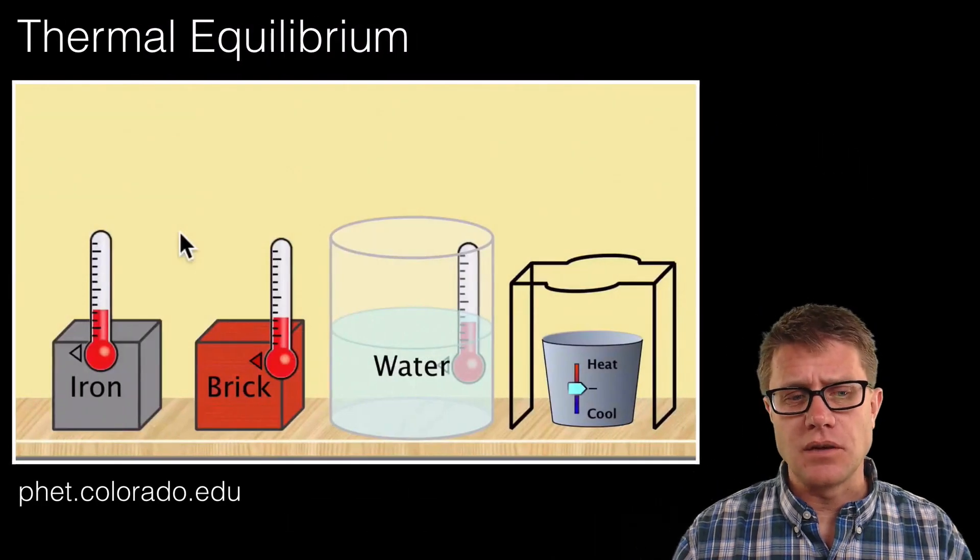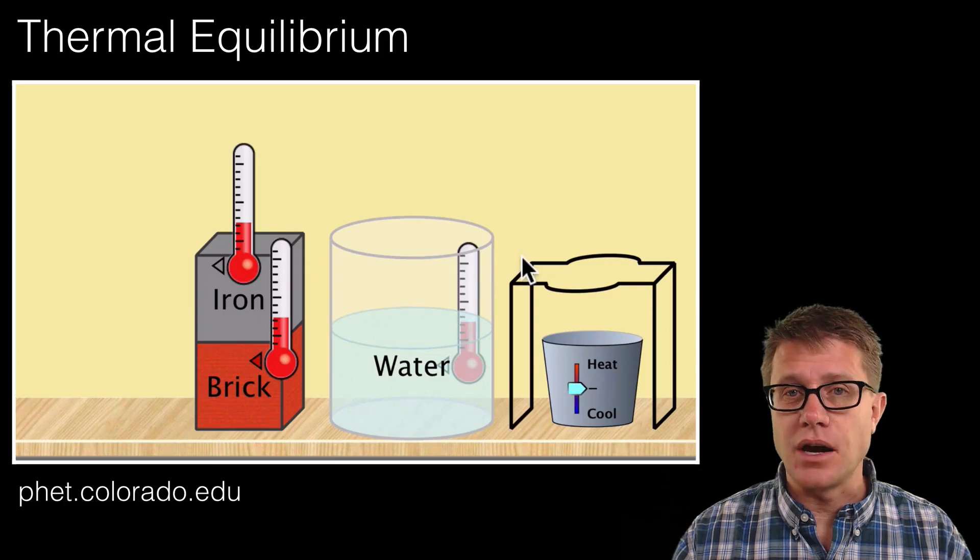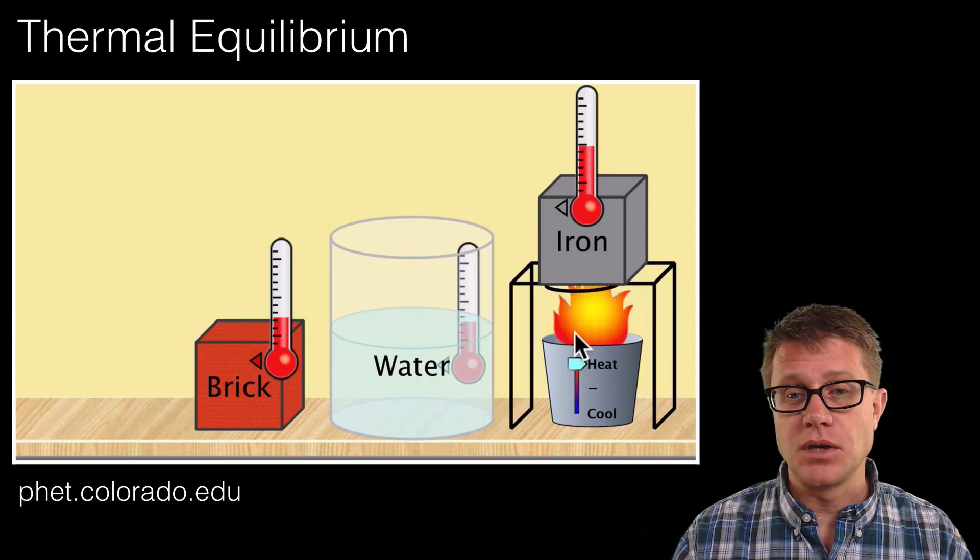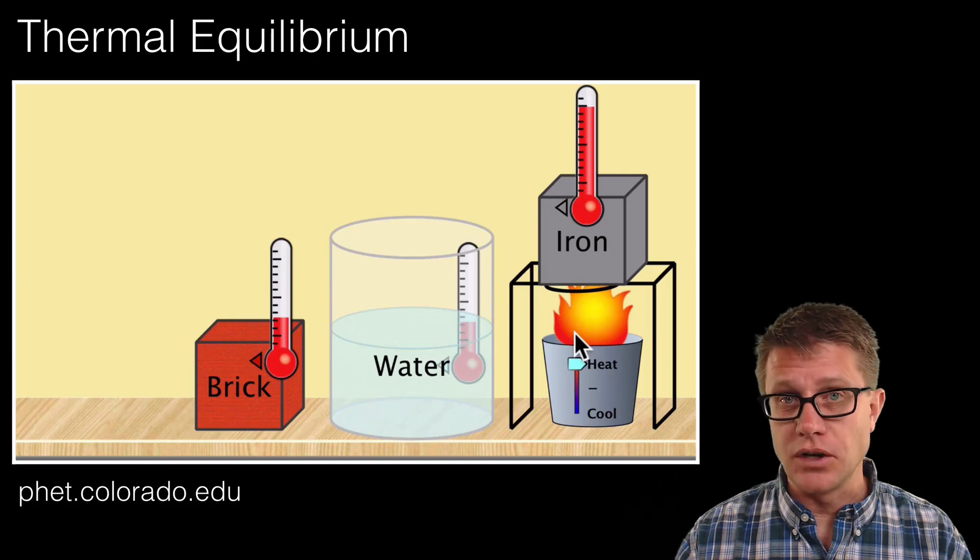If we look at a simulation of that, I am going to take an iron object and put it on a brick object, and we can see that the temperatures do not change. The reason why is they have the same temperature. Now let me heat up the iron. I am giving it a higher amount of kinetic energy. The molecules are moving around.